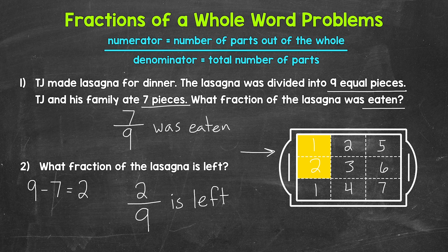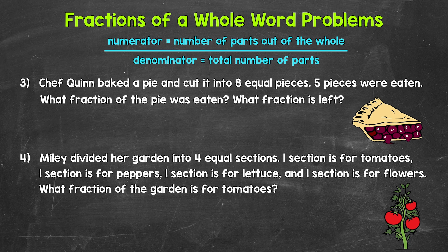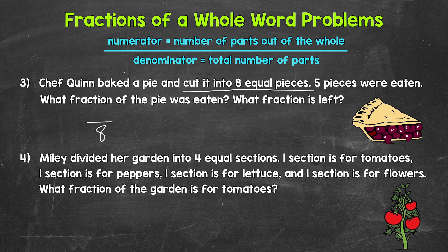Let's move on to numbers three and four. For number three: Chef Quinn baked a pie and cut it into eight equal pieces. Five pieces were eaten. What fraction of the pie was eaten, and what fraction is left? Let's start with what fraction was eaten. The denominator is the total number of pieces the pie was cut into — that's eight. So eight is our denominator. Five pieces were eaten, so five is our numerator. Five eighths of the pie was eaten.